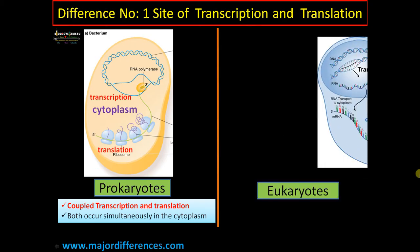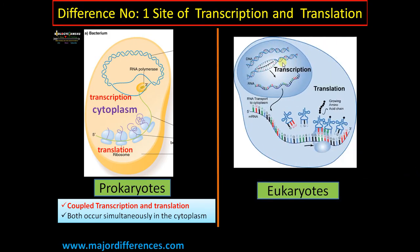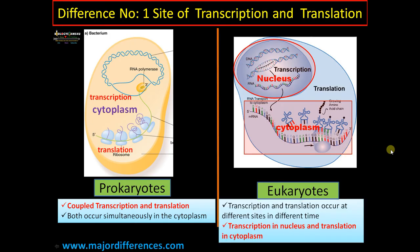In eukaryotes, transcription takes place inside the nucleus where mRNA is formed and processed. It then comes out through the nuclear pore into the cytoplasm where translation occurs. So translation and transcription are not coupled in eukaryotes — they occur in different sites: transcription in the nucleus, translation in the cytoplasm.